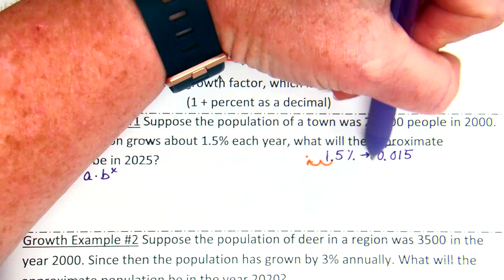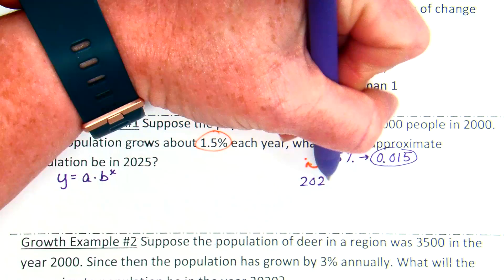Now, how many years does this problem span? Going from current, four years, but we're not talking current. We're talking about, they want to know in 2025, it originally started in year 2000. So 2025 minus 2000 is going to be a time span of 25 years. So that's going to go in when we talk about years.